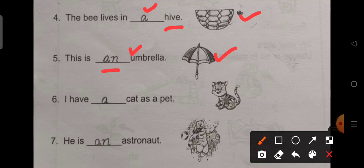Number 6. I have dash cat as a pet. I have a cat. The word cat begins with a consonant sound.